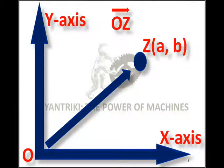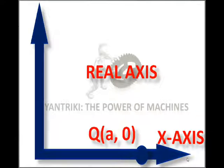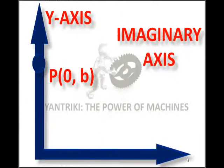be called vector OZ in the XY plane with reference to the rectangular X and Y axes. The X axis is called the real axis as it represents the real part of the complex number.